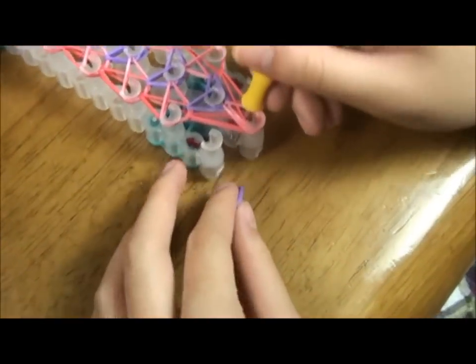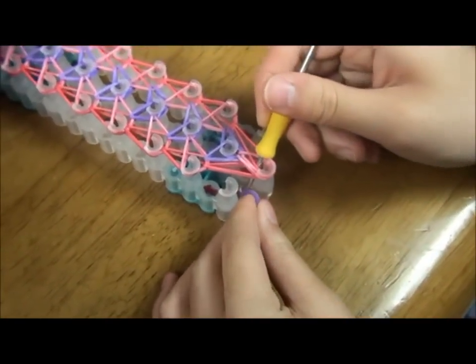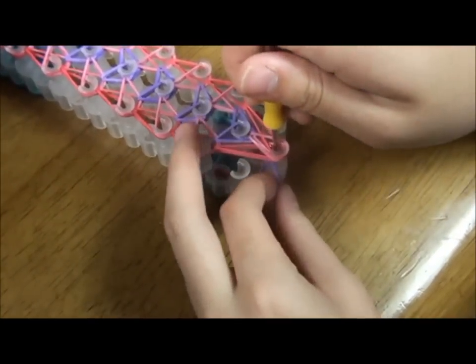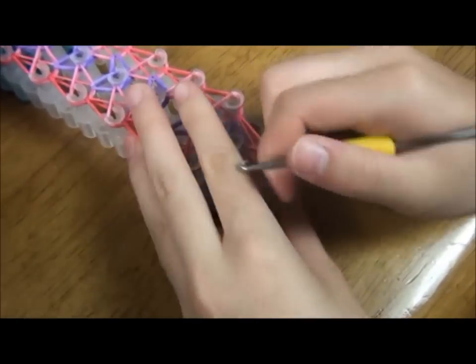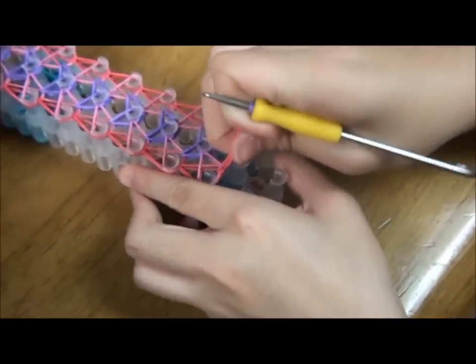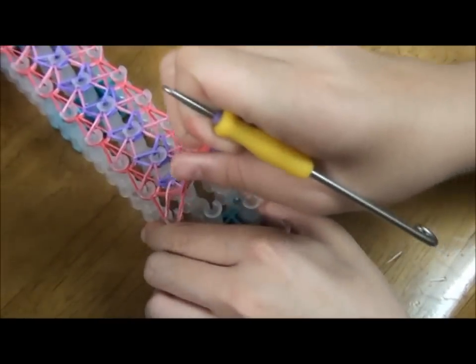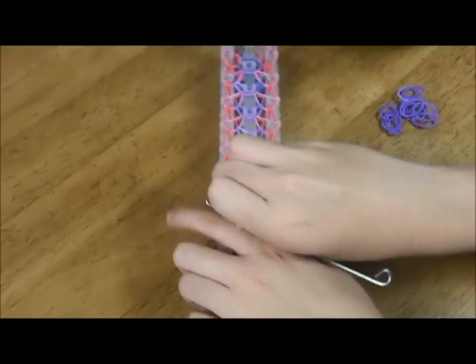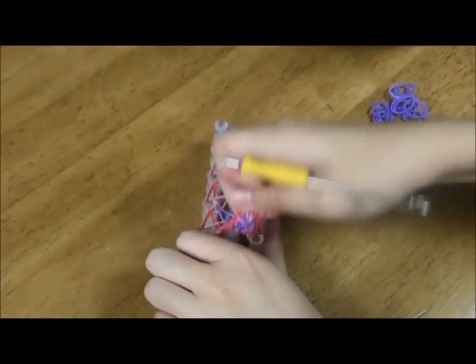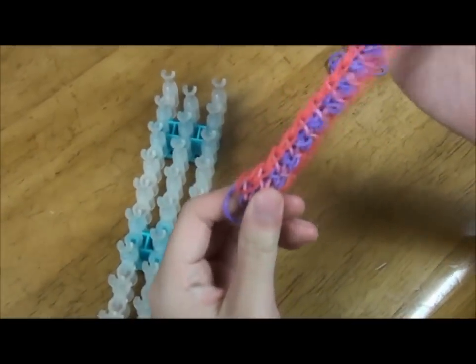Stick your hook in and grab the rubber band and pull it up, so it should look like this. Now it's time to pull it out. This is what it should look like.